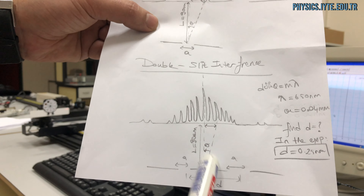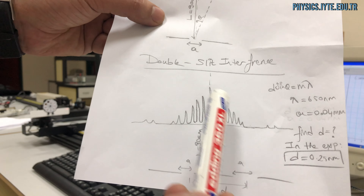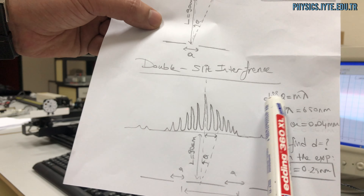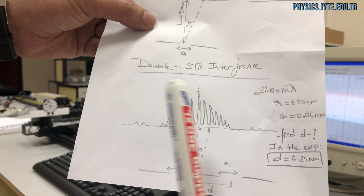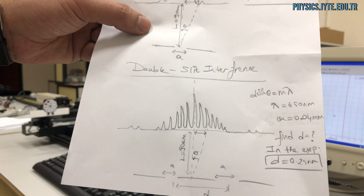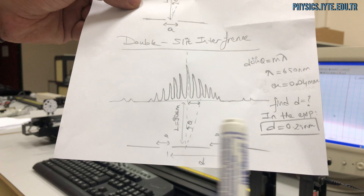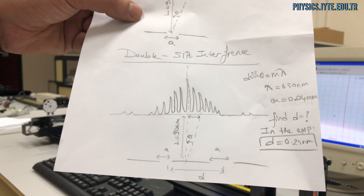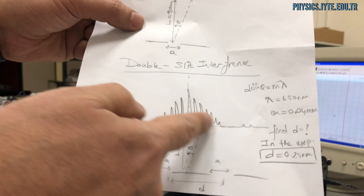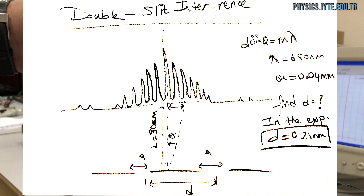The values of theta can be found from the n values of these peaks using this formula. The values of the different parameters are given on the right-hand side. Similarly, you have to find D values from this formula for a single peak and compare the theoretical D values with the experimental one.